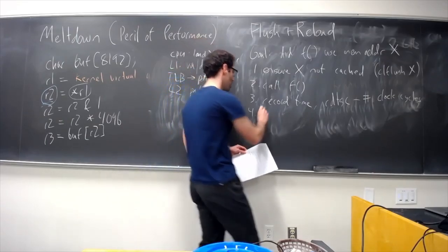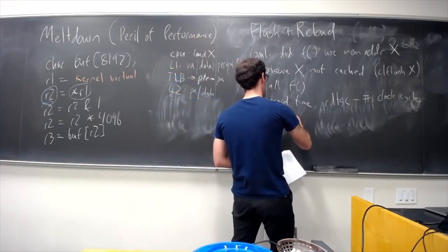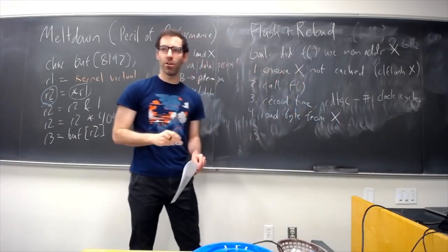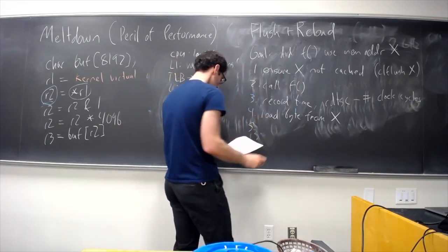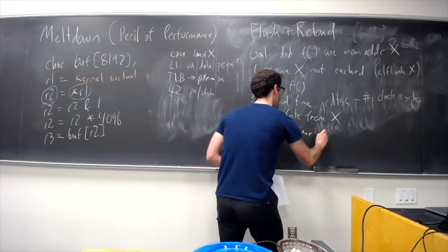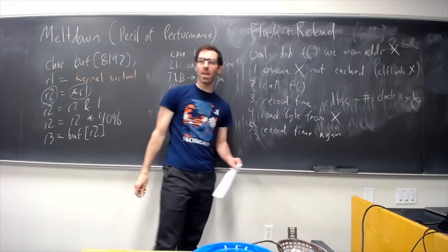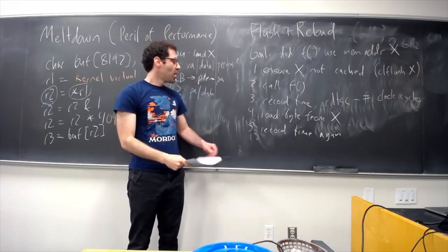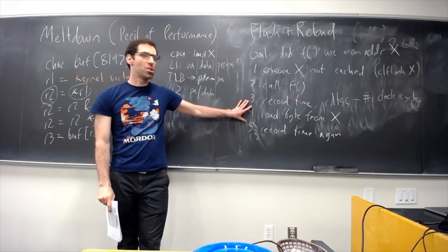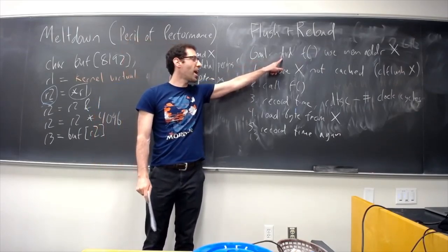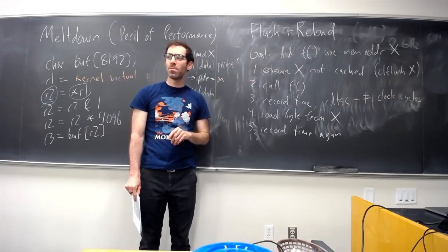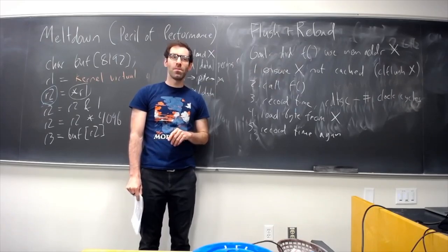So, this instruction gives us a way to measure time at the sort of level of precision that we care about. Exactly how many clock cycles have taken place. To record the time, we load a byte from our address x, and then, we record the time again. How can we use these two times to answer our question, did x, or did f access memory address x?